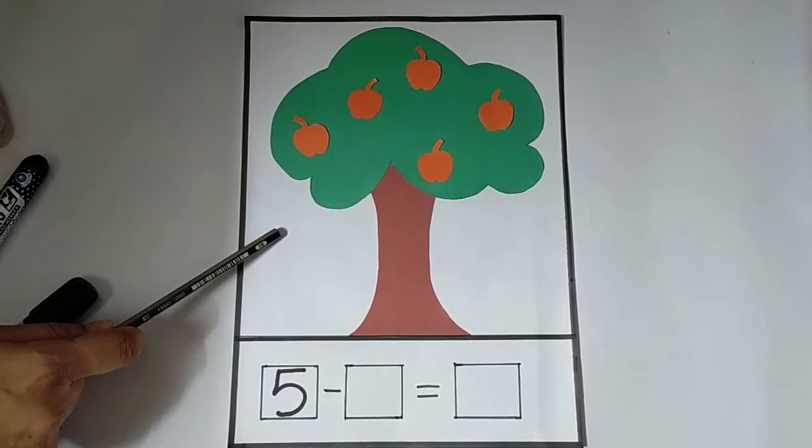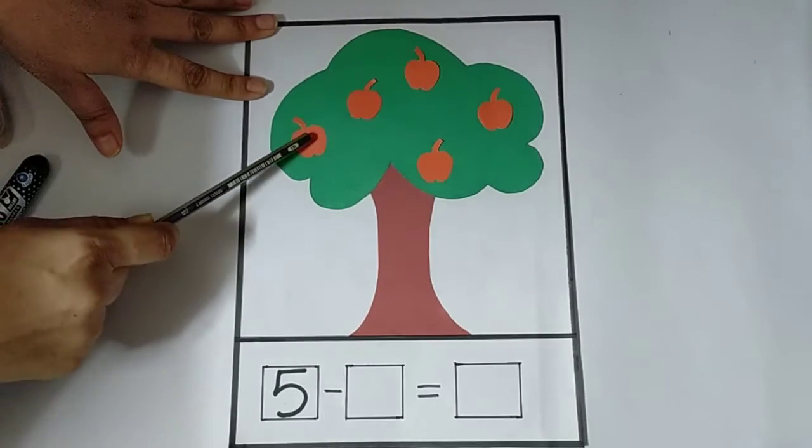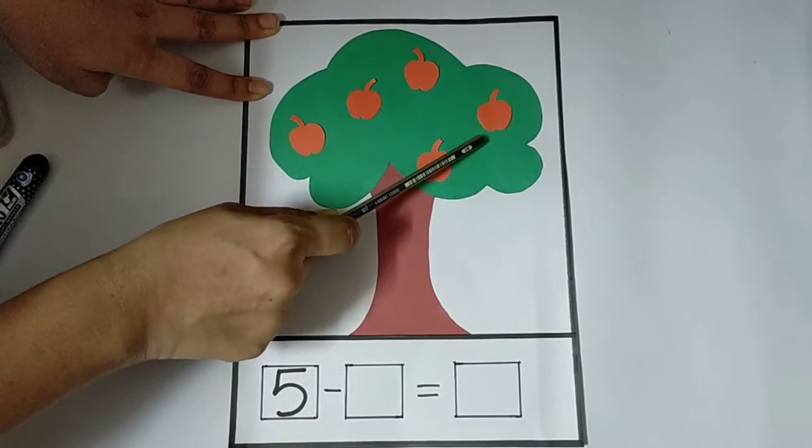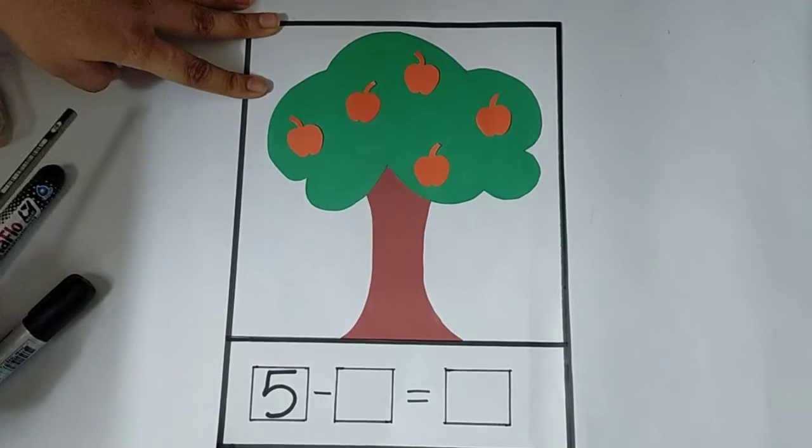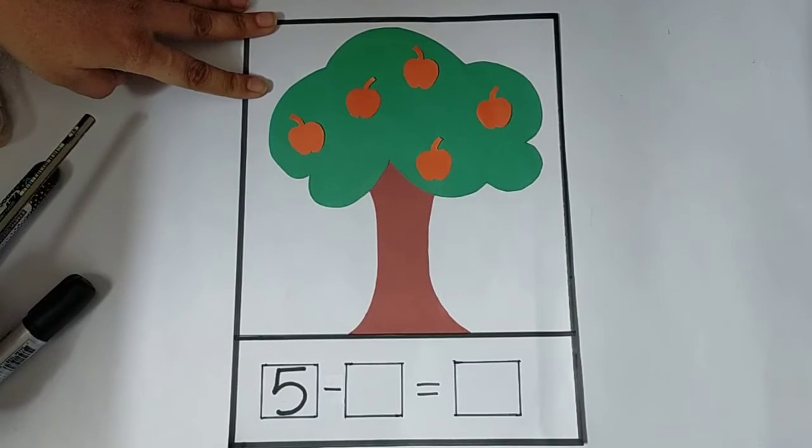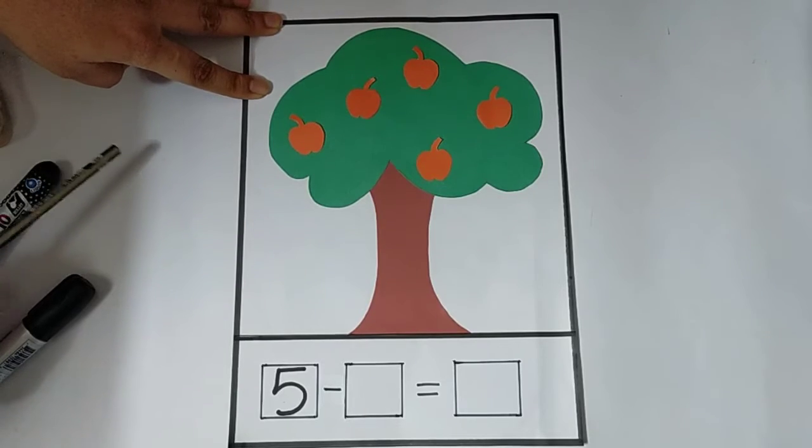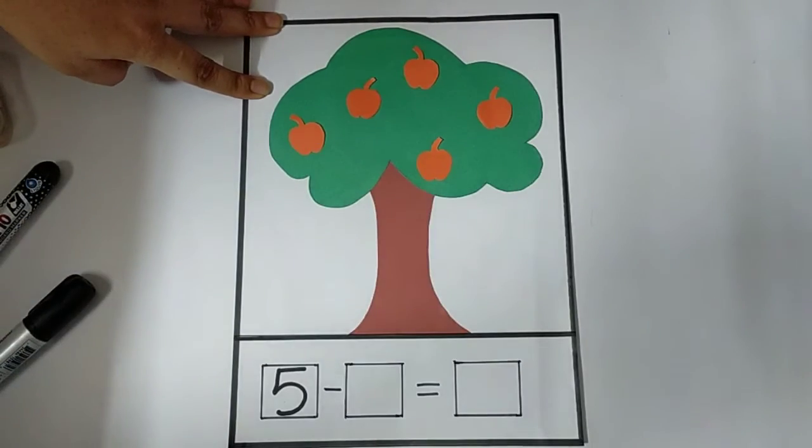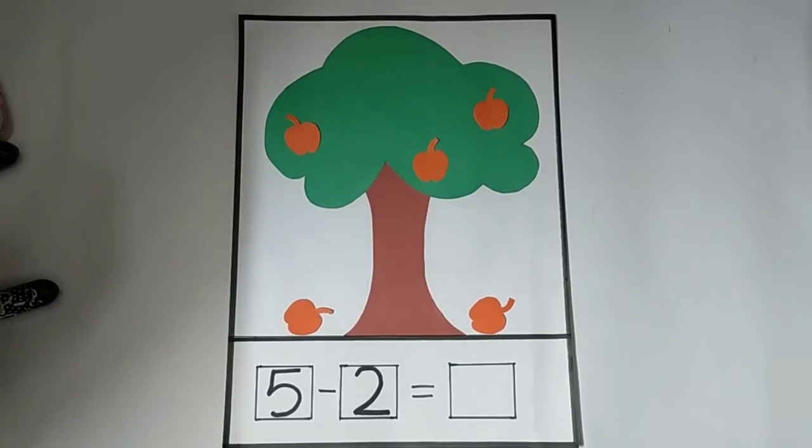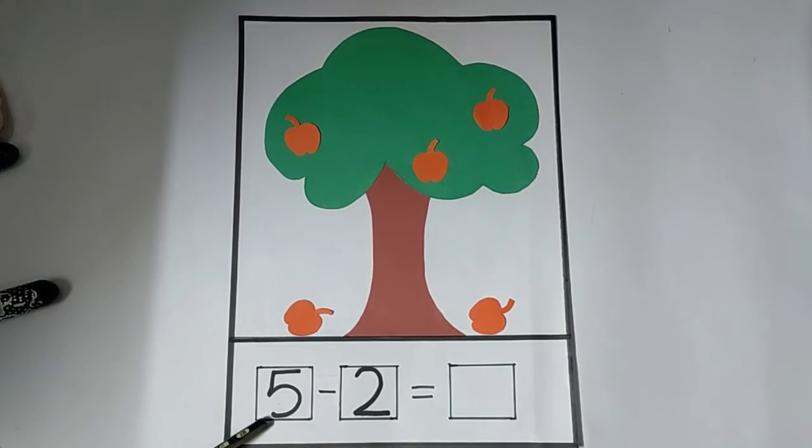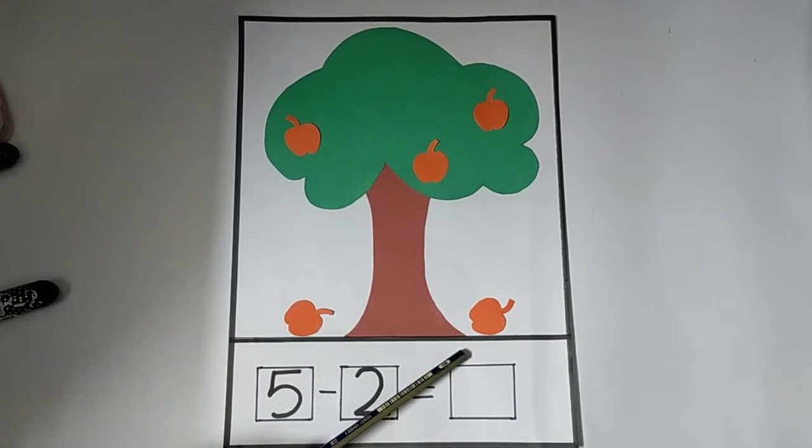Can you count the apples? One, two, three, four, five. So, now a tornado came and the two apples fell down. Okay, now how many apples were there? Five. And two apples fell down. Two.